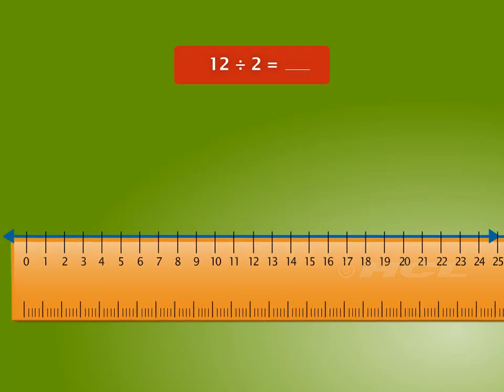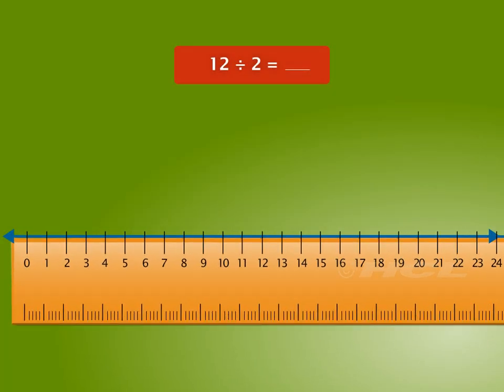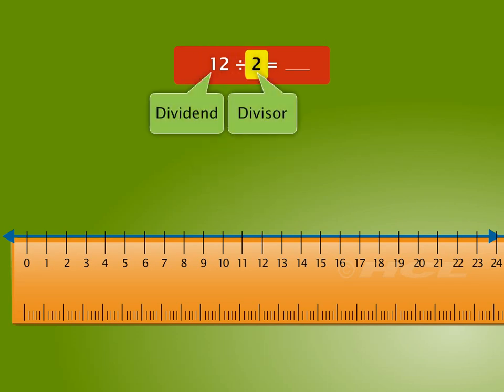Let's divide 12 by 2. Which number is the dividend here and which number is the divisor? 12 is the dividend and 2 is the divisor.